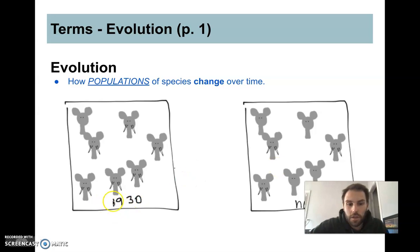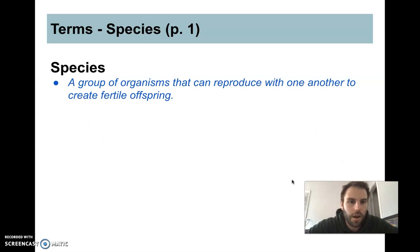However, these elephants in 1930 are probably no longer around, right? And so now these elephants are their offspring or their grandchildren elephants, right? And so again, it's not these individual elephants that are changing, it's the population over time.